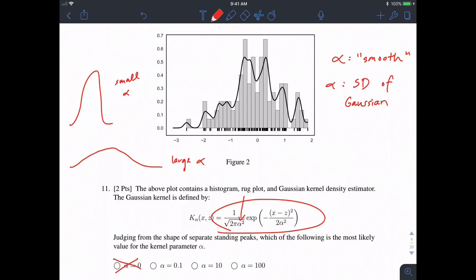So of these three, knowing what we know about how alpha impacts the smoothness and the specificness and jaggedness of a KDE, it would probably make sense to estimate alpha to be 0.1, and that's what we have.